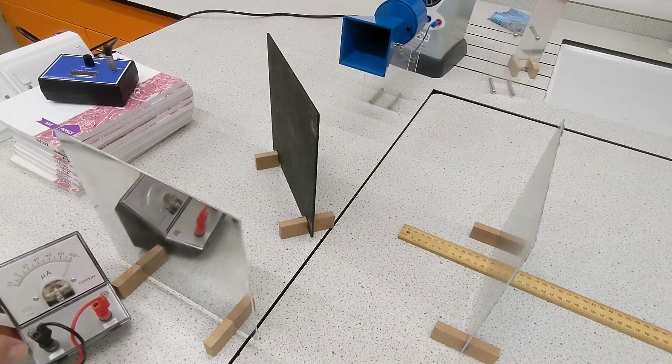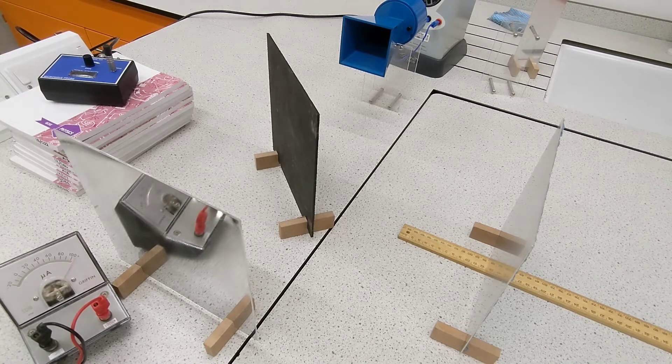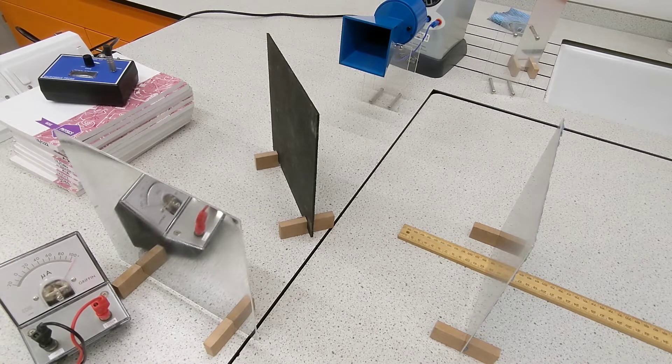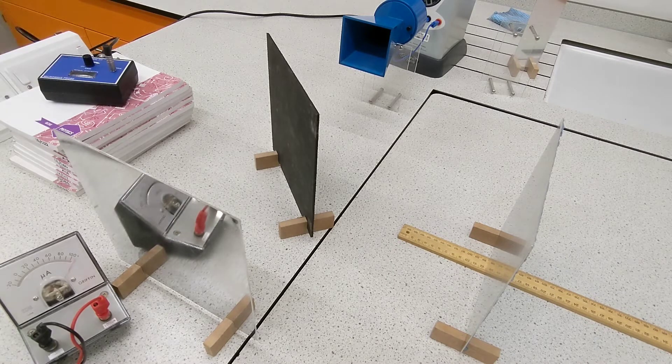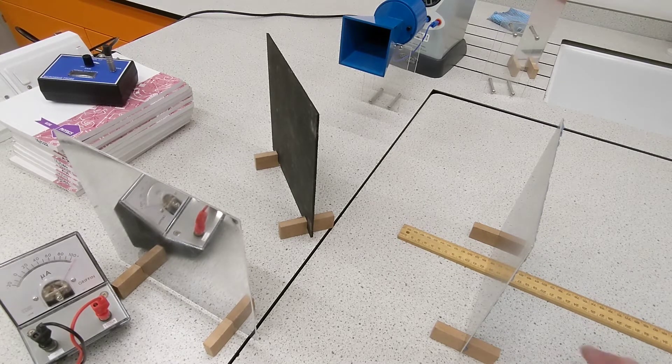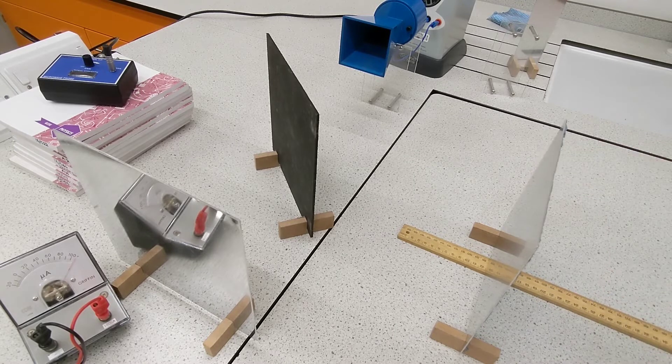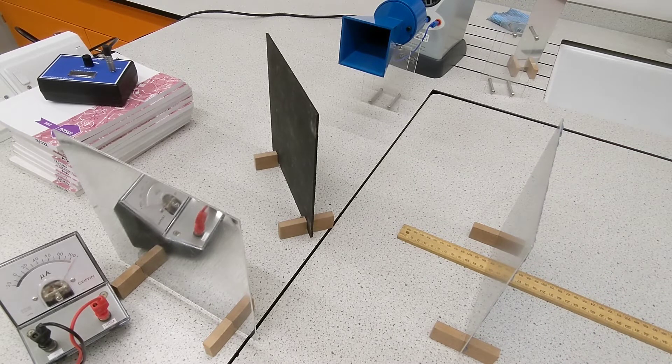Here I've got a microammeter connected to the detector so that we can see the signal, the intensity of microwaves that are arriving at this antenna over here. I've got a ruler here so I can measure the position of this reflector. This is an interferometer.